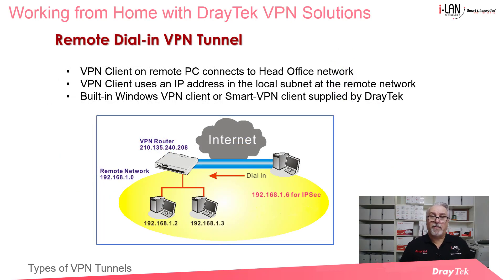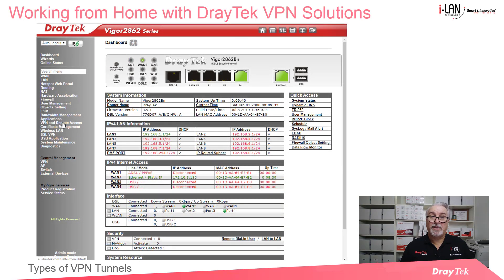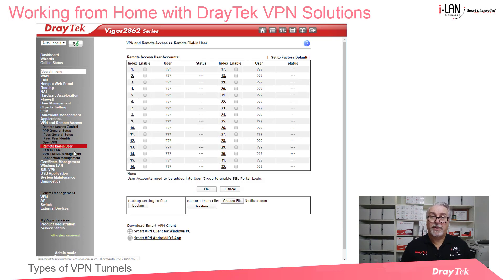The second type of VPN is a remote dial-in VPN tunnel, also known as a host-to-gateway or host-to-LAN VPN. Here a single user uses a VPN client application running on their computer to set up a VPN tunnel for secure communication with the head office network. Note that each remote dial-in VPN tunnel created counts towards the total number of VPN tunnels supported by the router. For example, the Vigor2862 series supports a maximum of 32 VPN tunnels, which can be 32 remote dial-in connections or a combination of dial-in and LAN-to-LAN VPNs. Most VPN clients will work for remote dial-in to a Draytek router, including the default Windows VPN client and the free Draytek Smart VPN client.